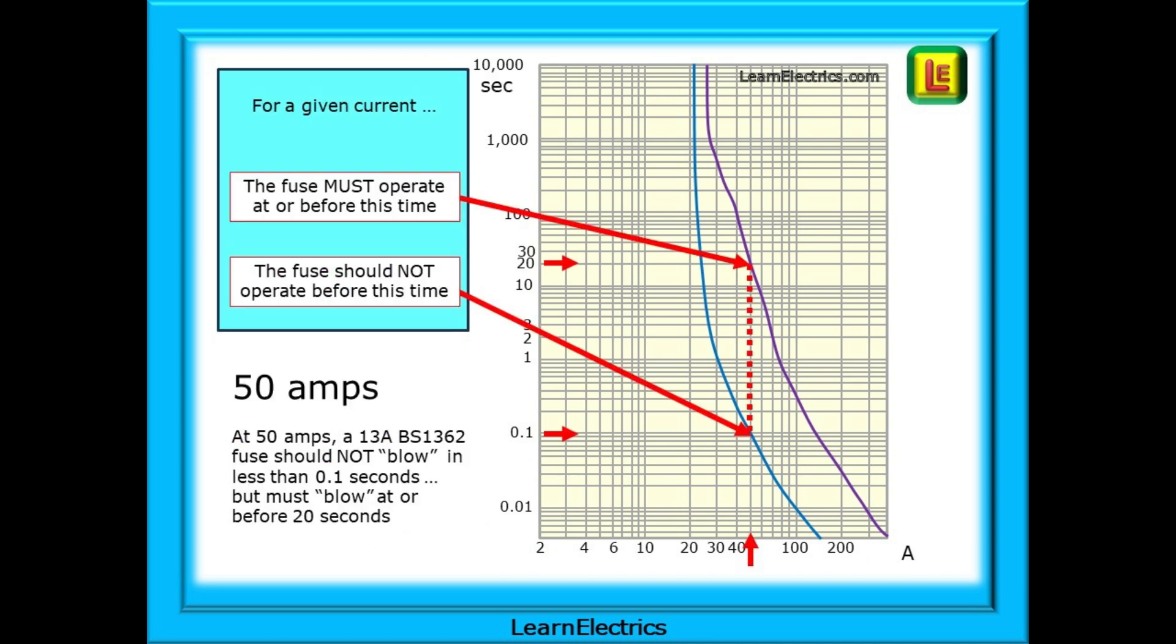Now take a look at the two fusing curves, the blue and purple lines. By finding the current flowing through the fuse along the bottom, we can, from the curves, determine two important numbers. The purple line tells us that the fuse must operate, must blow, at or before this time, the latest time. The blue line tells us that the fuse must not blow before the time indicated, the earliest time.